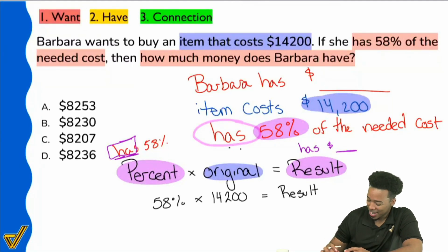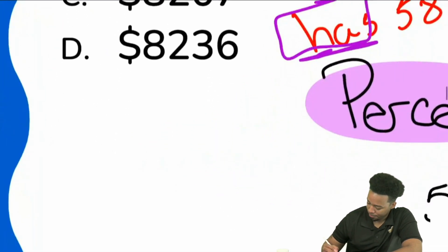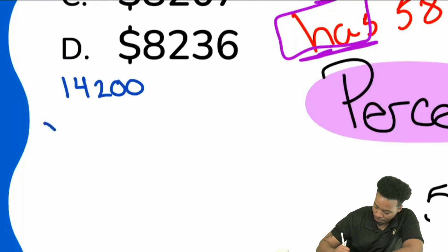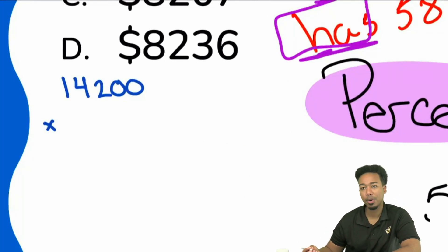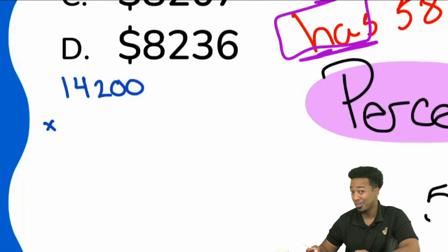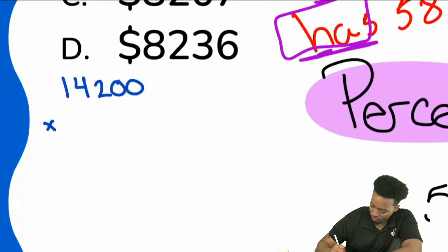Here we go. We have $14,200 multiplied by 58%. What is 58% as a decimal? Is it 5.8, 0.58, or 0.058? Correct — 0.58. You can also say 0.58. That works out too.